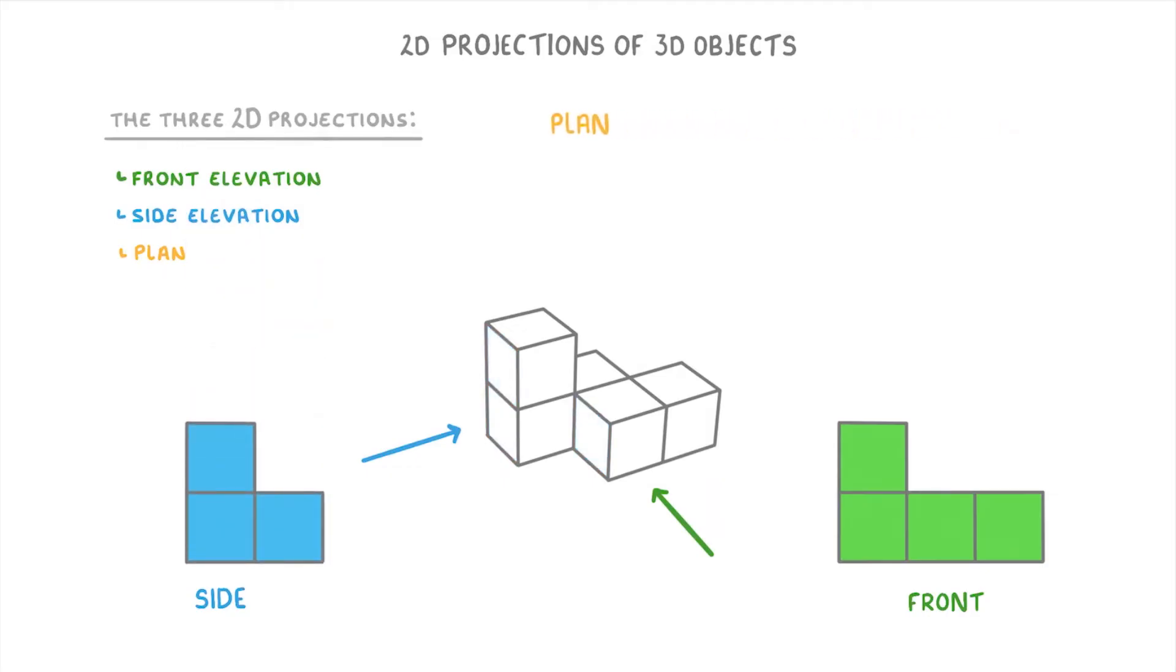The last view is the plan, which is a bit different because this time it's as though you're taking a bird's eye view, looking at it from above. So you're only going to see the squares facing directly upwards, which would be these 4 squares. So it would look like this.